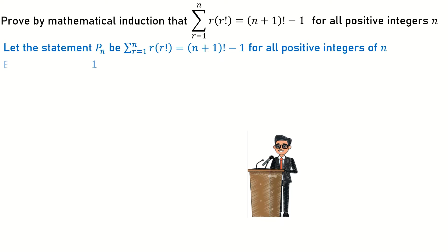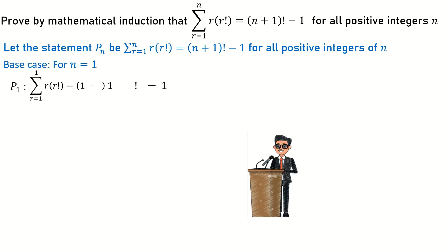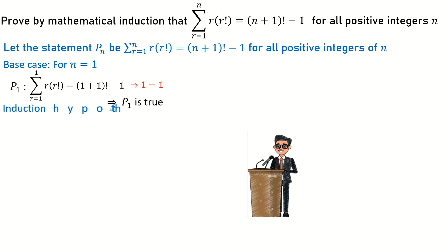I begin with the base case, that is verifying if the statement P(1) is true. The statement P(1) is true because the sum from one to one is the same as one plus one factorial minus one. So we can conclude that the statement P(1) is true.